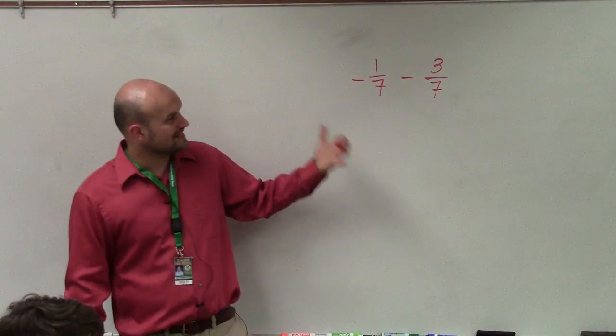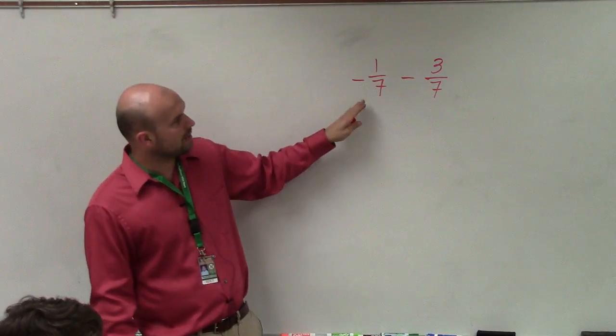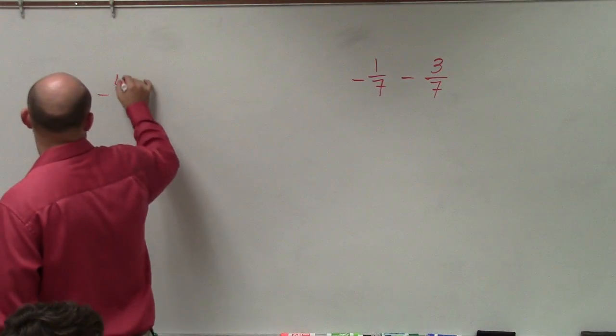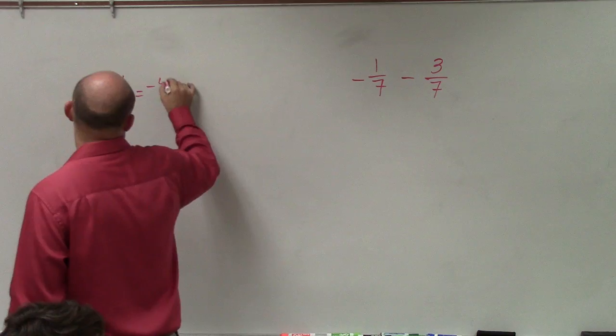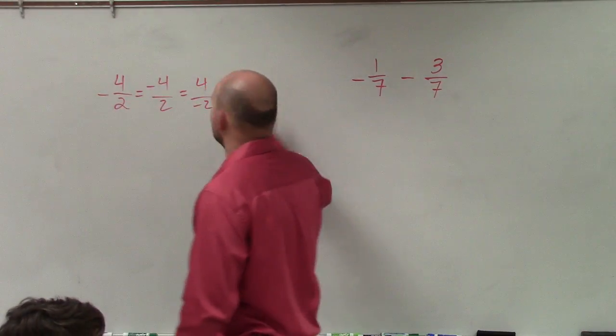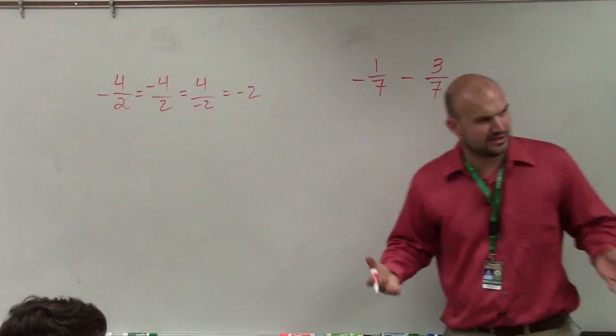Now, when dealing with negatives and positives, even though it doesn't matter where the negative sign is placed for a fraction—for instance, negative four-halves equals negative 4 over 2, which equals 4 over negative 2, which is all equal to negative 2—it doesn't really matter where I put the negative sign.